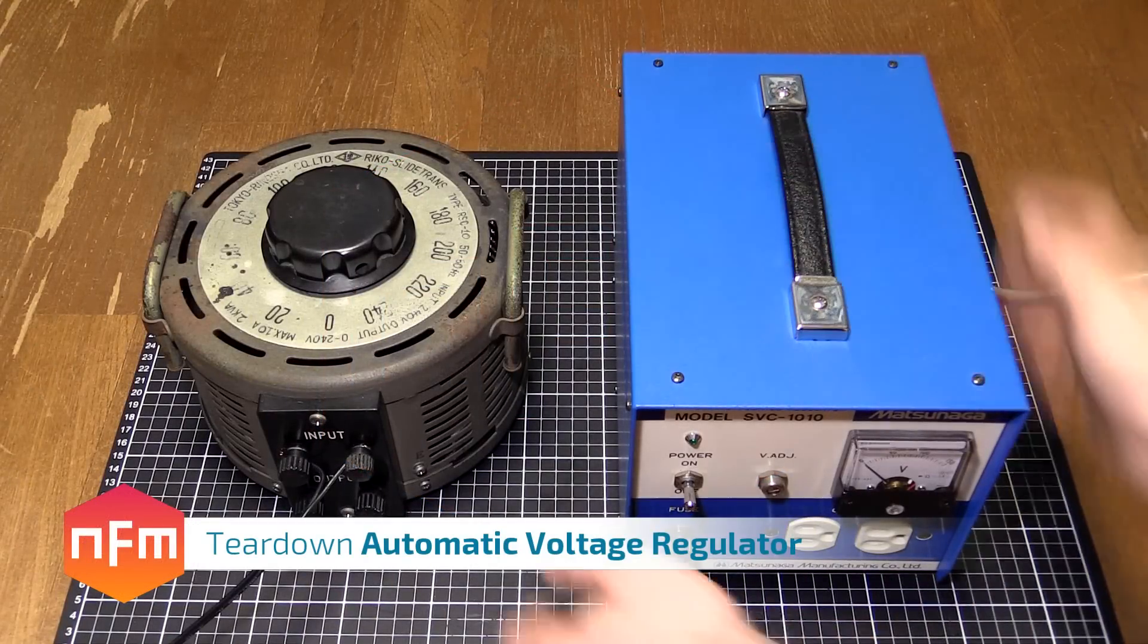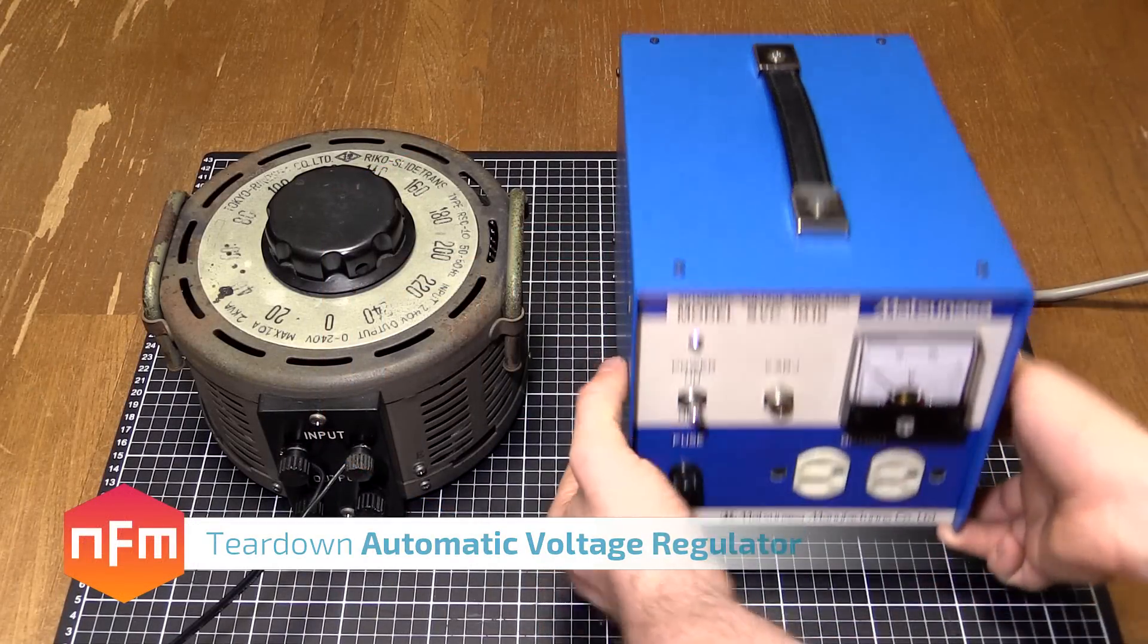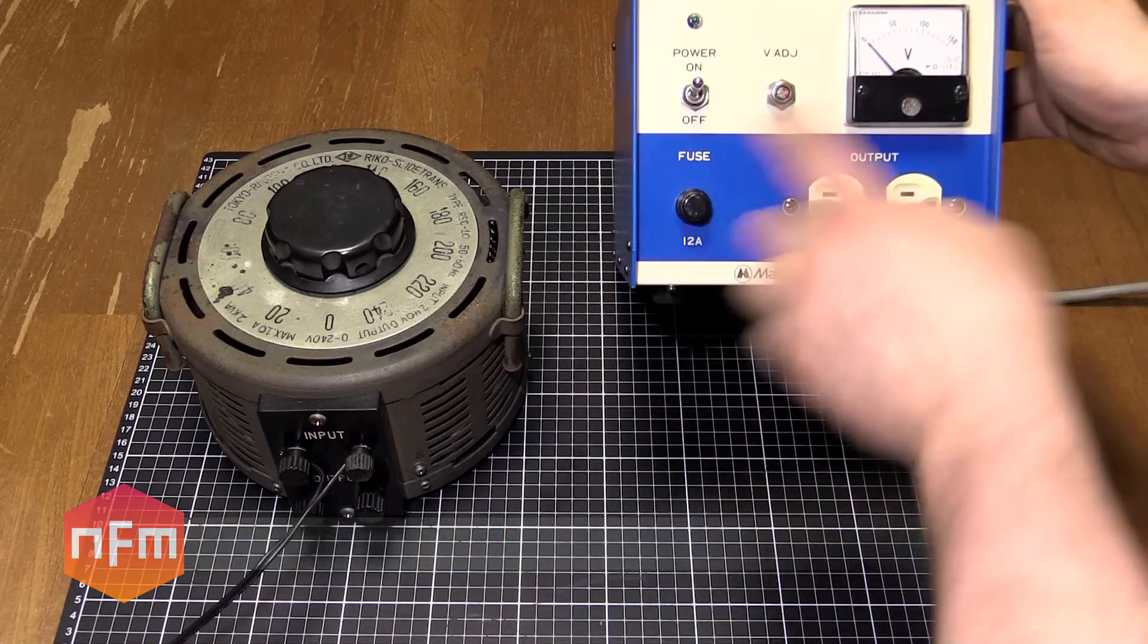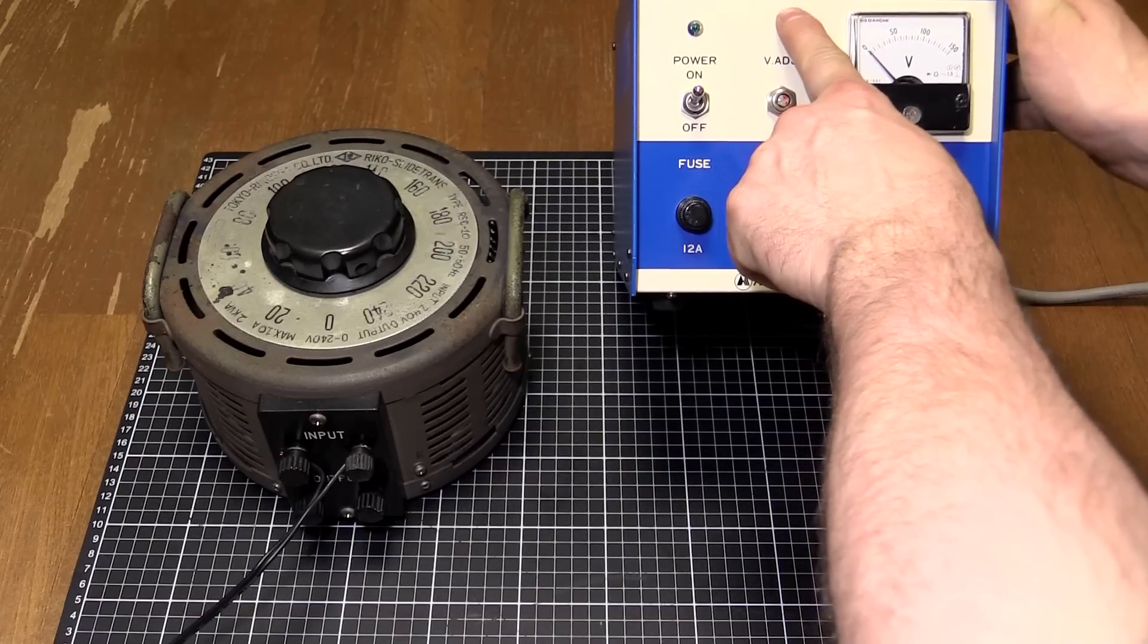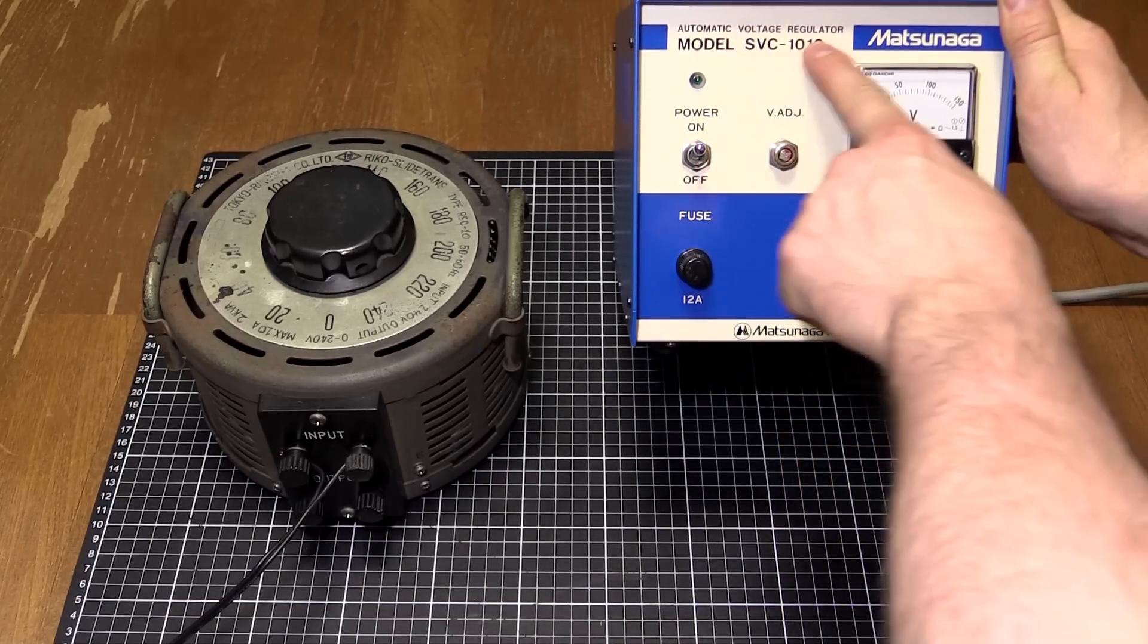Hey guys, on one of my trips down to Akihabara, I found this thing. Pretty heavy kind of box. So I was having a look at it. It's a Matsunaga model SVC-1010 automatic voltage regulator.